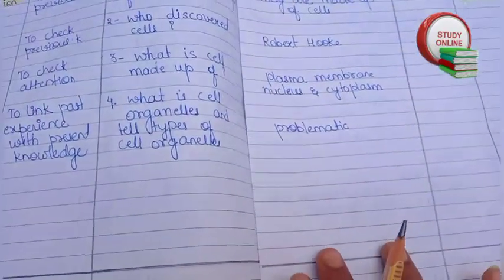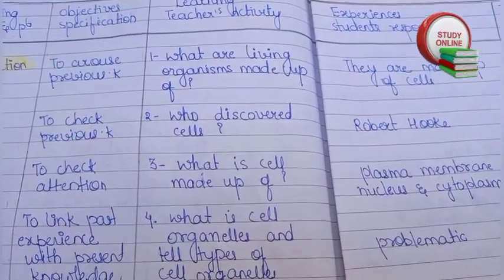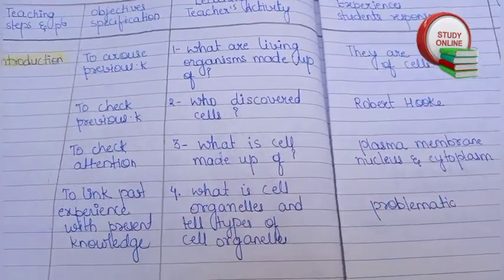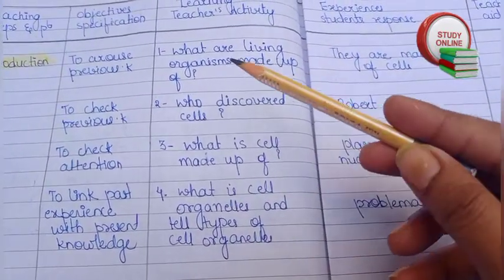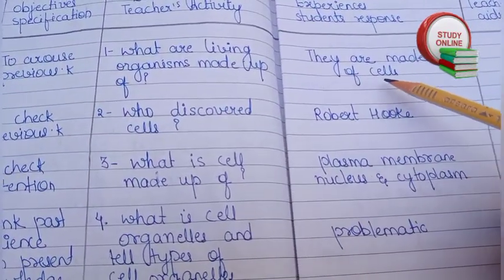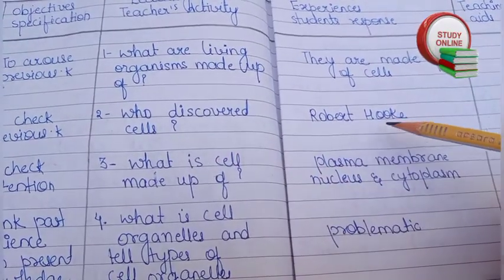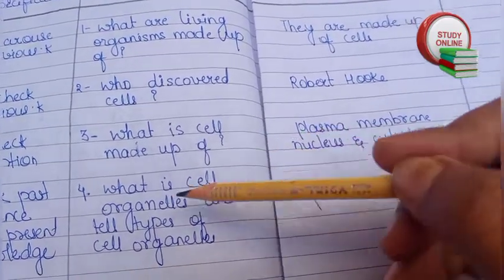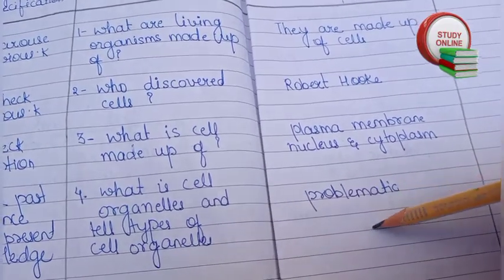Now here are the introduction questions. For the introduction we have to ask four questions: What are living organisms made up of? Students will answer: they are made up of cells. Who discovered cells? Robert Hooke. What is a cell made up of? And then: What are cell organelles and what are the types of cell organelles? — that last one would be problematic for students.